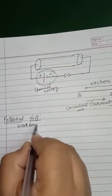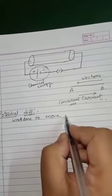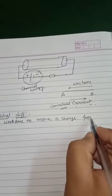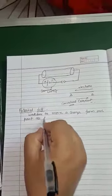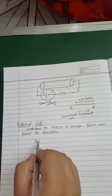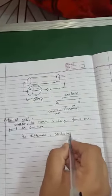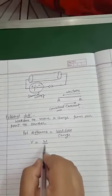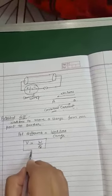So how will we define potential difference? Potential difference can be defined as the work done to move a charge from one point to another in a circuit or conductor. Mathematically, potential difference V is equal to work done W upon charge Q. So our formula is V = W/Q.